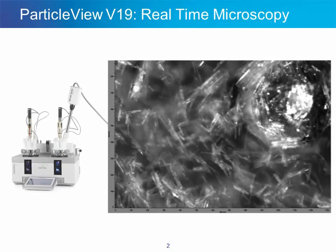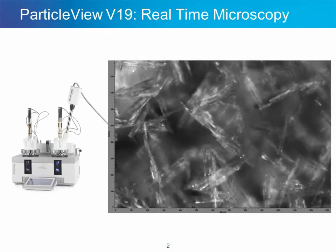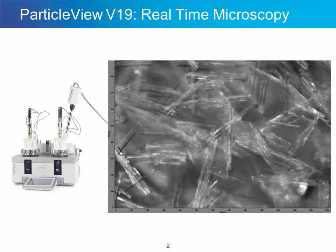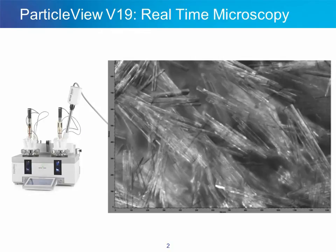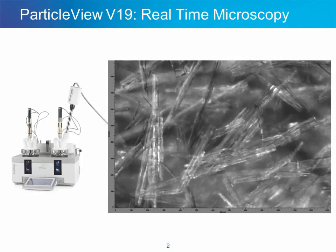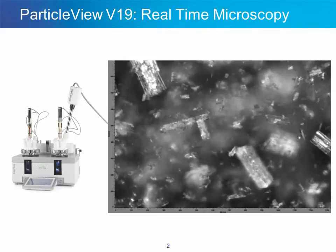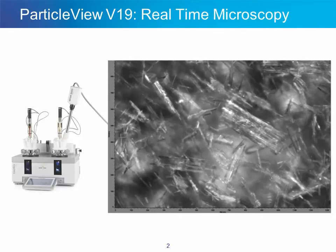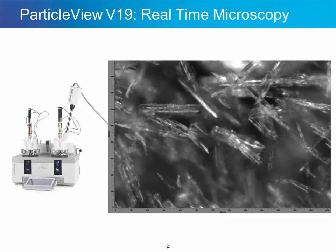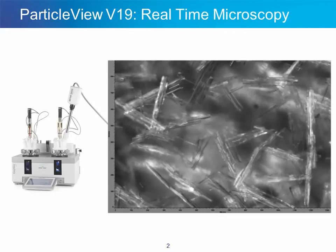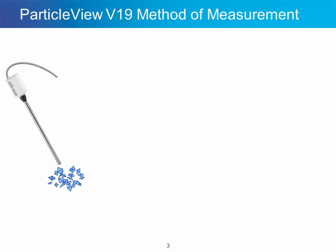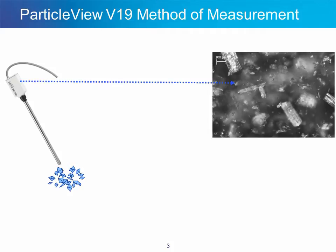ParticleView V19 is a probe-based real-time microscope that provides comprehensive process understanding for systems that involve particles, crystals, or droplets. In this video we can directly observe a crystallization process as it moves from the seeding point through a secondary nucleation event and into a growth phase where the crystals grow out into needle-shaped crystals. ParticleView V19 is a probe-based instrument that takes high-resolution microscope images of particles as they exist in process.